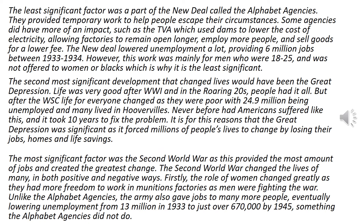The least significant factor was the Alphabet Agencies, part of the New Deal. They provided temporary work to help people escape their circumstances. Some agencies had more of an impact, such as the TVA, which used dams to lower the cost of electricity, allowing factories to remain open longer, employ more people, and sell goods for a lower price. The New Deal lowered unemployment considerably, providing 6 million jobs between 1933 and 1934. However, this work was mainly for men aged 18–25 and was not offered to women or Black Americans, which is why it is least significant.